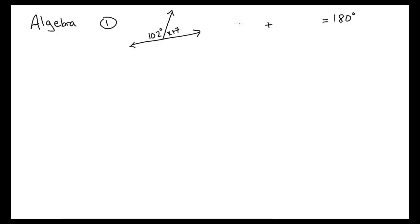When you look at these two, they're obviously a linear pair, they're supplementary. So we put 102 right here, we put x plus seven right here, and then we solve it. We're dealing with the left-hand side of our equation: 102 plus seven is 109.